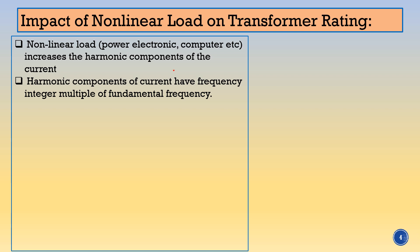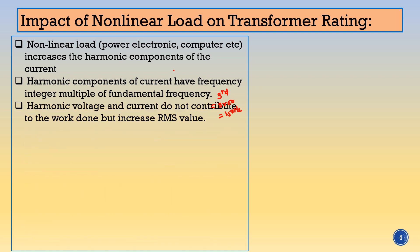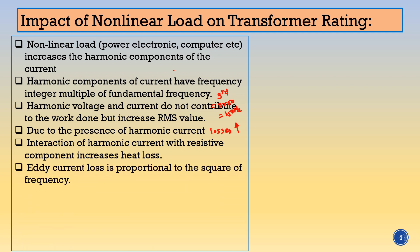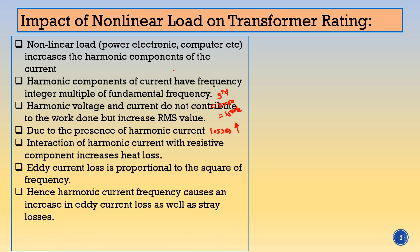For third harmonics, the frequency will be 3 × 50 = 150 Hz. It is the integer multiple of harmonic frequency. The harmonic voltage and current do not contribute to any work done, but they increase the RMS value of the current. Due to the presence of this harmonic current, losses are going to increase because the RMS value of the current increases. The interaction of the harmonic current with the resistive component increases the heat losses. Eddy current loss is proportional to the square of frequency.